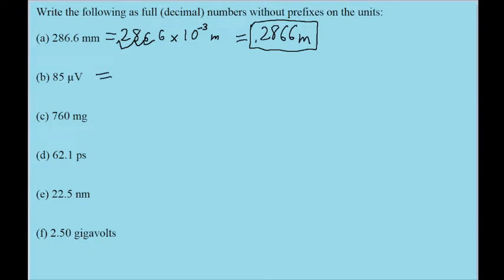Part B is 85 mu V. So the mu is a prefix meaning a millionth, or a micro, and the V is a volt, so this is 85 microvolts. A millionth is to the power of negative 6. So we can write this as 85 times 10 to the power of negative 6 volts.